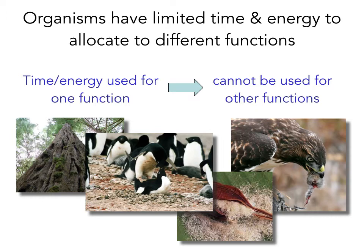As shown here in these figures on the left, the energy this tree spends on protective structures like bark can't be used for new growth — that energy has been expended. Likewise, in these penguins, the energy and time spent mating can't be used for feeding. In this plant species, all of those seeds coming out of that pod — the energy going into those can't be used for defense, and so on.